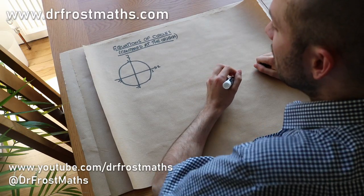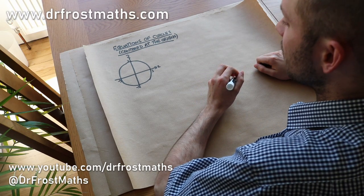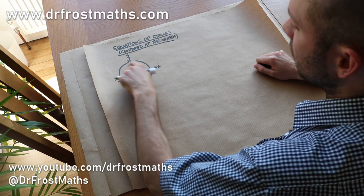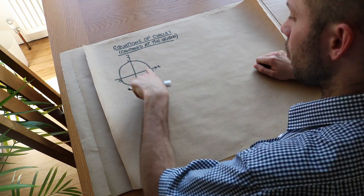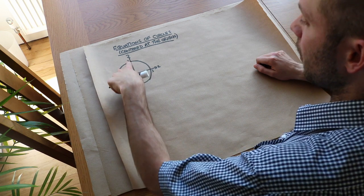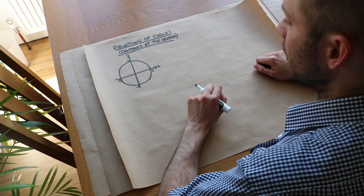In this video we're going to look at equations of circles which are centered at the origin. So we can see the center of this particular circle is at the origin and it goes through 3 on the x-axis and minus 3, and it goes through 3 on the y-axis and minus 3 as well.